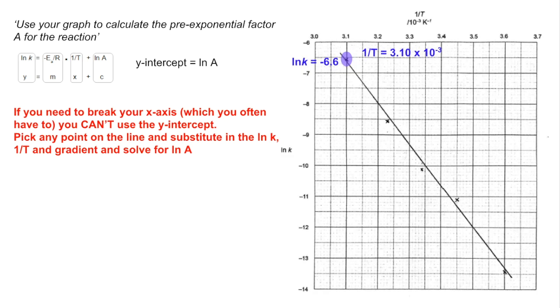Pick that point there. There's the ln K and the 1 over T values. So, reminder, the gradient from the previous slide was minus 13,500, and substituting all of that in, we get that, and then if we work out the stuff in the bracket and rearrange, we get ln of A equals minus 6.6 plus 41.85. That comes out at a ln A of 35.25.